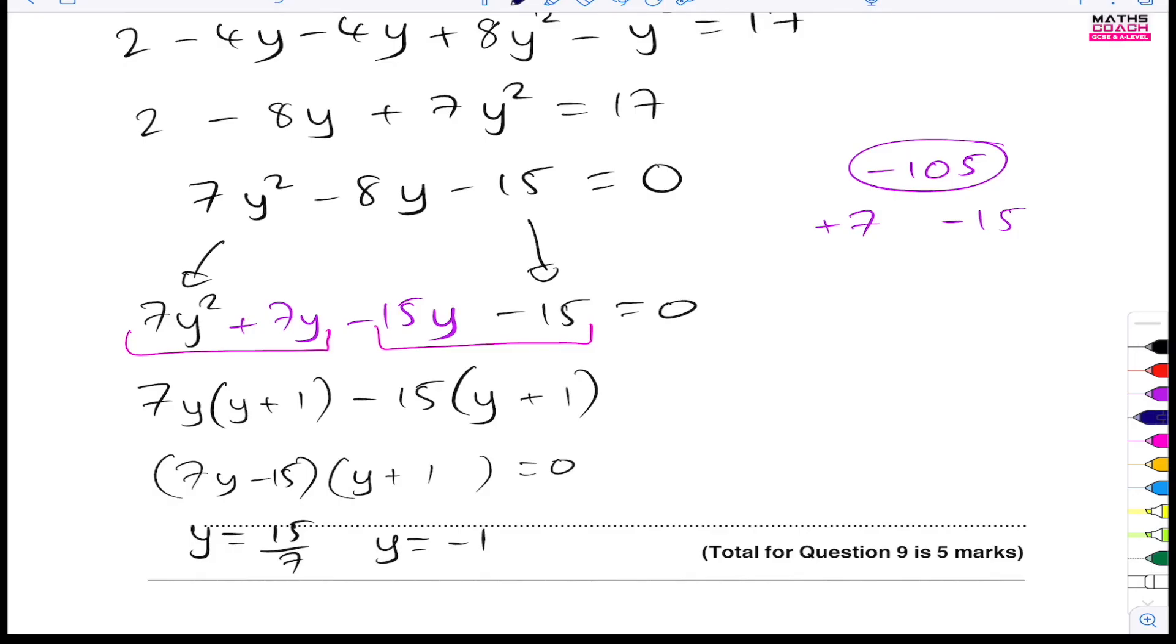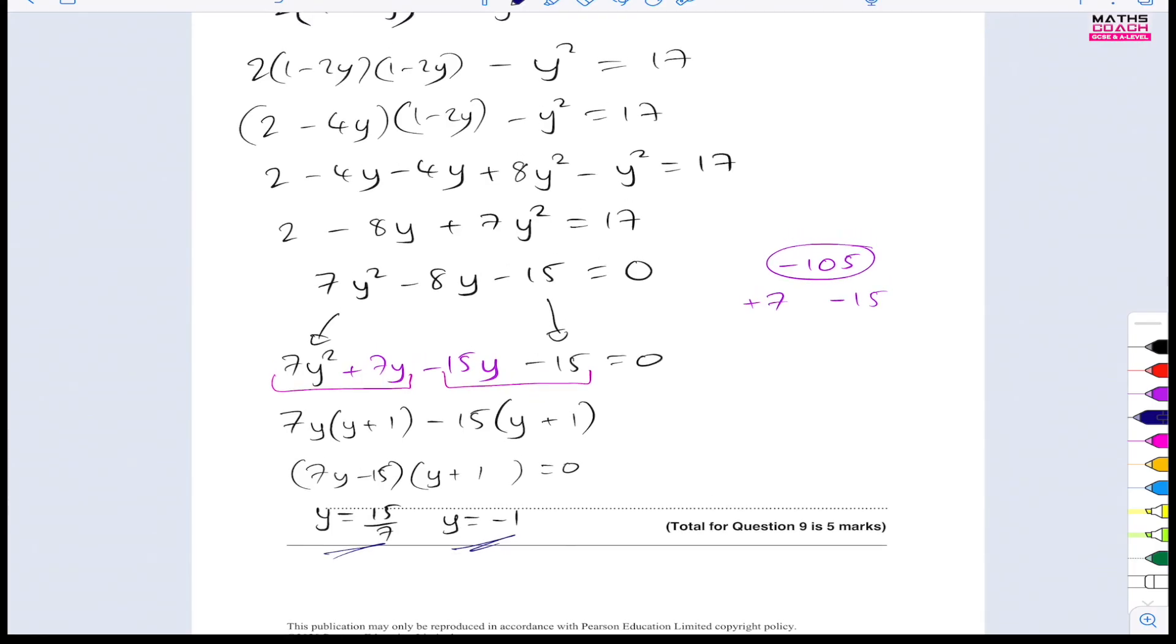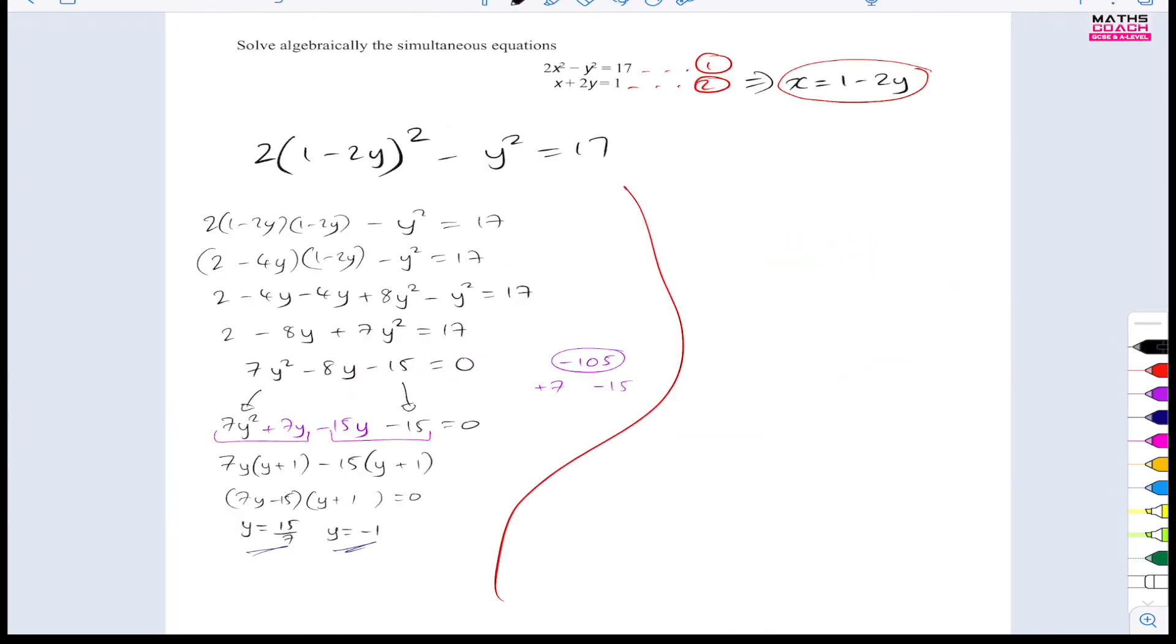Now, these are just my y values. I now need to go and find my x values. So I'm just going to quickly zoom out here. Make this text smaller so I can fit this in. Right. Now, to find x, I will sub y equals 15 over 7 and y equals minus 1 into this equation because it's already in the form of x equals. Okay.